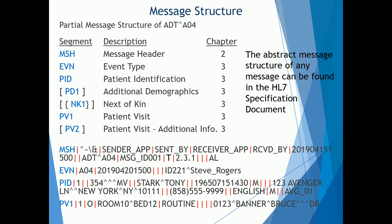What makes up a message are segments. If we look at the bottom half of our screen, we have the same message from the first video. Each segment starts with a segment ID. So you have MSH, EVN, PID, and PV1. Looking at the partial message structure of ADT A04, you'll see these different segments: MSH is the message header, EVN is the event type, and PID is patient identification.